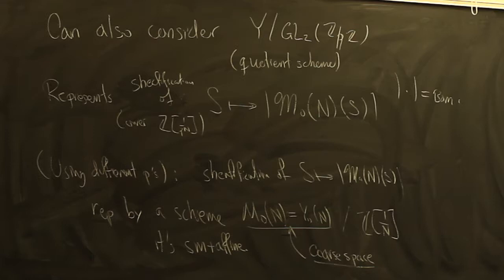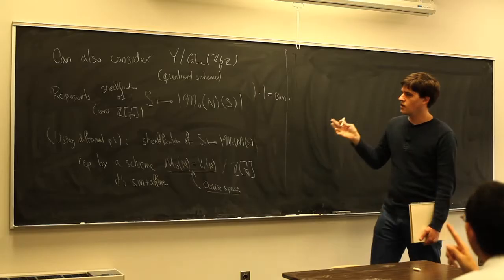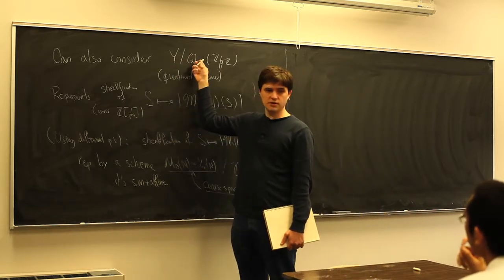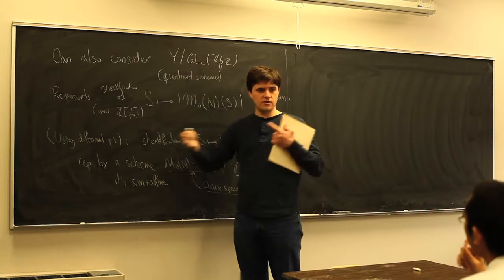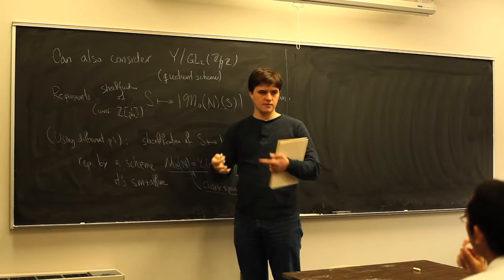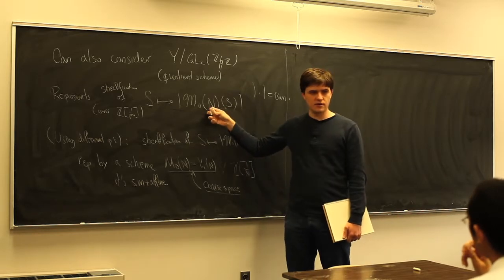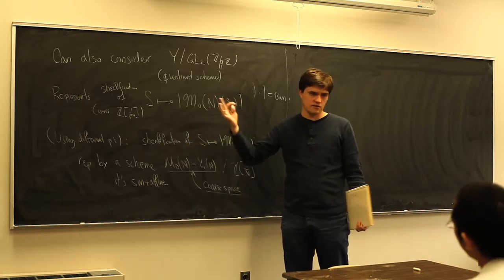I wanted to introduce this so that if you're not very comfortable with stacks, you can just think about these schemes and you probably don't lose all that much — these things are pretty close to schemes. To show that the sheafification is representable: if you invert p, then the quotient represents it. Using two different primes p, you get it represented over a cover of Z[1/n], patch them together, and get it over Z[1/n]. This sheaf is canonical and doesn't depend on any choice.